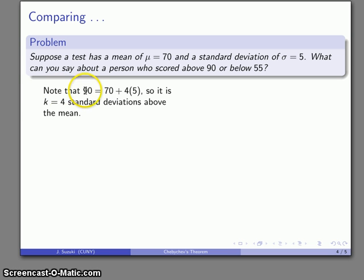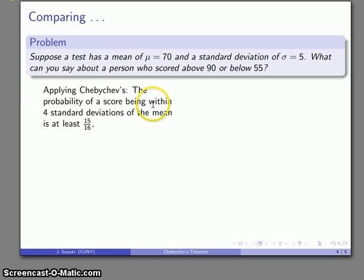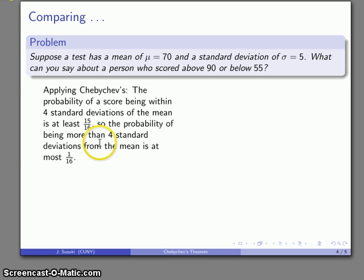And so what I might begin with is I might note that this score of 90, with the mean 70 and standard deviation of 5, this 90 is four standard deviations above the mean. Now, Chebyshev tells us if we have K = 4, then the probability that a score is within four standard deviations of the mean, 1 - 1/4², works out to be 15/16. So that tells us that at least 15 out of 16, the probability of a score being within four standard deviations of the mean, is pretty high. So the probability of being outside that range is at most 1/16.